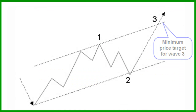Once correction wave 2 is completed, you can draw an uptrend line from the start of wave 1 through the end of wave 2. Next, you draw a parallel line with this trend line through the top of wave 1. Now you have a trend channel. The upper side of this channel is the first price target for wave 3. If price does not reach the upper side of this channel, you probably are looking at a wave C and not a wave 3. You should keep a horizontal support through the endpoint of wave 2. If the price falls through this level, wave 2 is not finished and will become more complex, and wave 3 has not yet started.